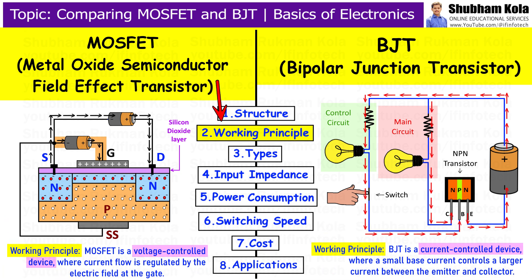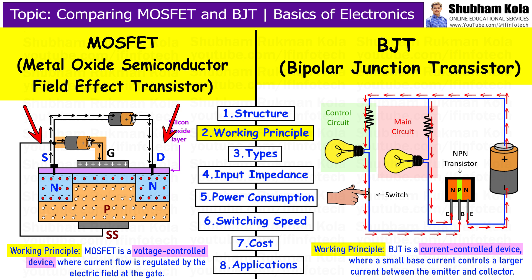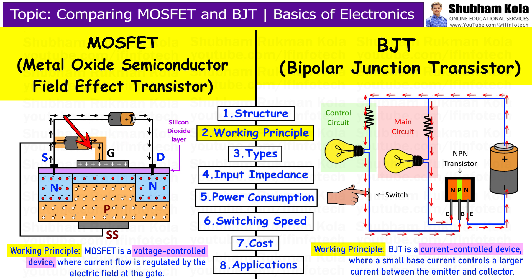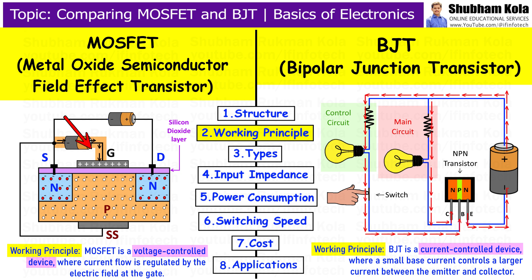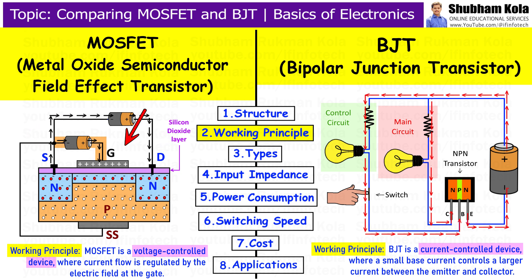Second is working principle. Moving on to the working principle, the way MOSFET and BJT control current is fundamentally different. In MOSFET, the current between the source and drain is controlled by the electric field created by the gate voltage. When a voltage is applied to the gate, it creates an electric field that influences the flow of electrons and holes between the source and drain. No current flows into the gate, and the device is controlled purely by voltage.